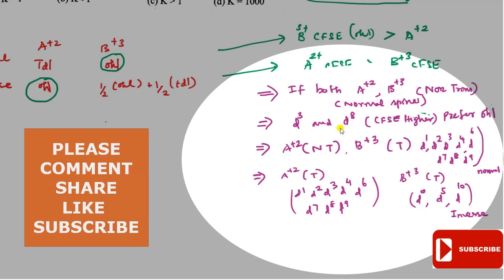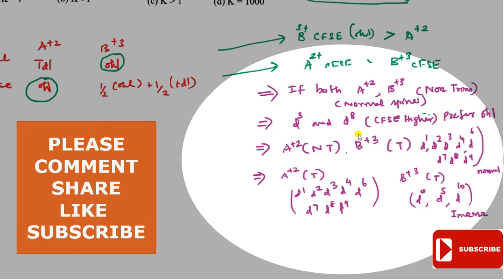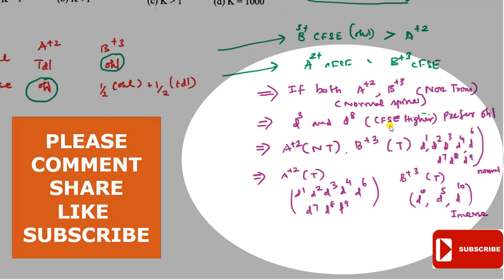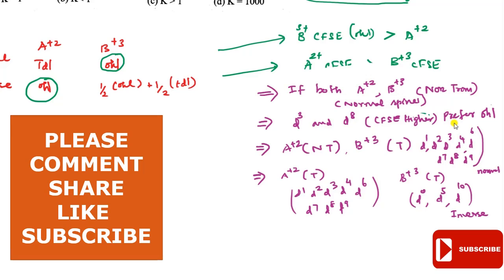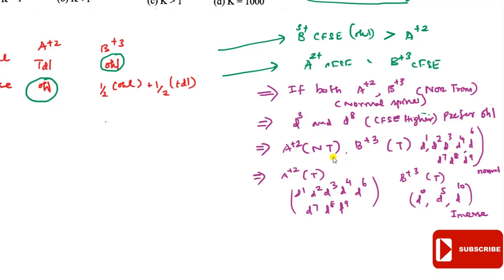The D3 and D8 CFSE configurations have higher values, so they prefer the octahedral voids. If the dipositive ion is non-transition and the tripositive ion is a transition element with D1, D2, D3, D4, or D6 configurations (i.e., except D0, D5, D10), then B³⁺ CFSE is greater in octahedral field — it is normal spinel.